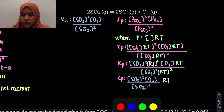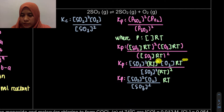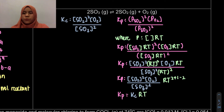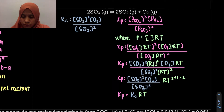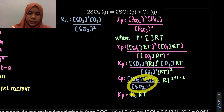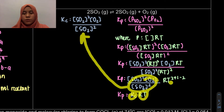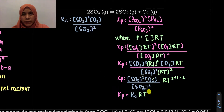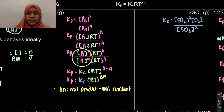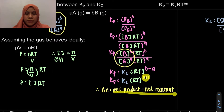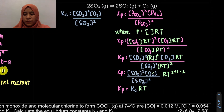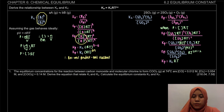So once expanded, the concentration terms form our Kc, and the remaining RT factor gives RT to the power of delta N. In this case, delta N is moles of product minus moles of reactant. This is actually how to derive it — that's the full derivation.